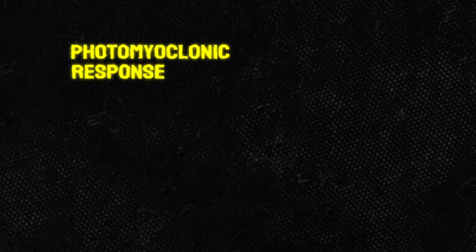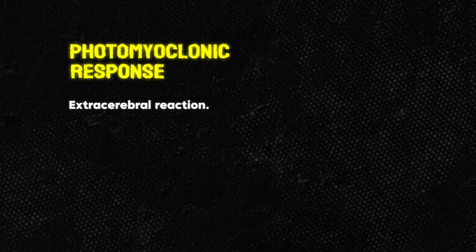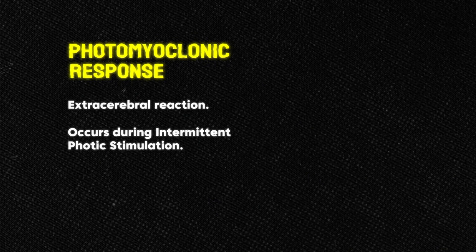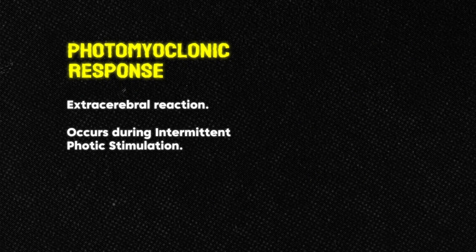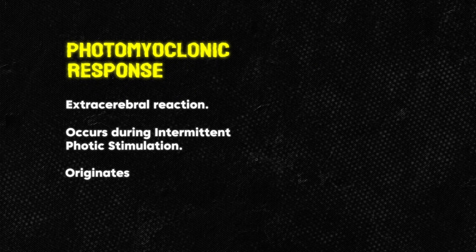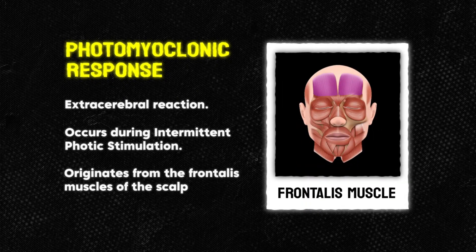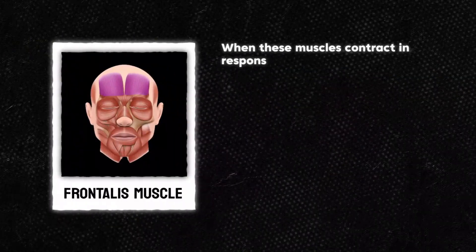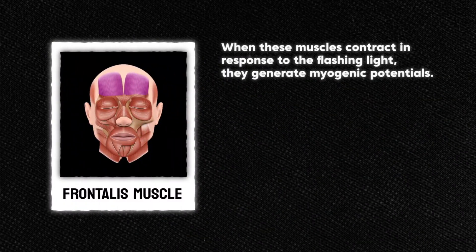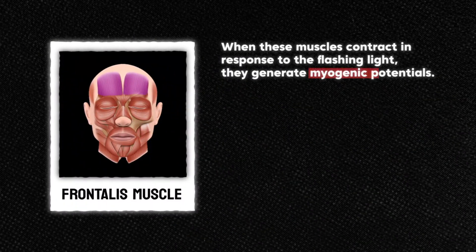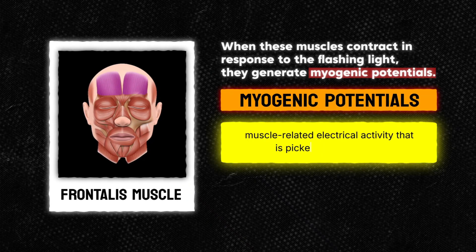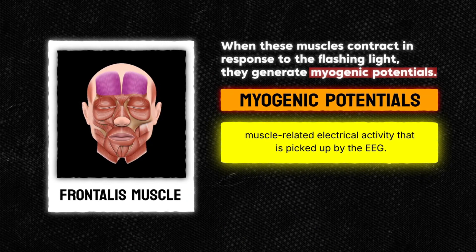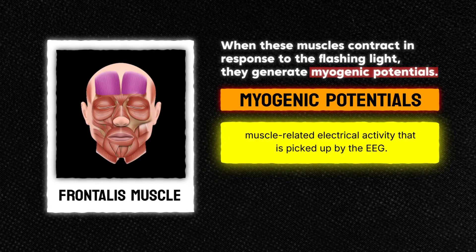A photomyoclonic response is an extracerebral reaction that occurs during intermittent photic stimulation, or IPS for short. This response originates from the frontalis muscles of the scalp. When these muscles contract in response to the flashing light, they generate myoclonic potentials — essentially muscle-related electrical activity that is picked up by the EEG. These myogenic potentials can range from a single motor unit potential to a sustained series of spikes.